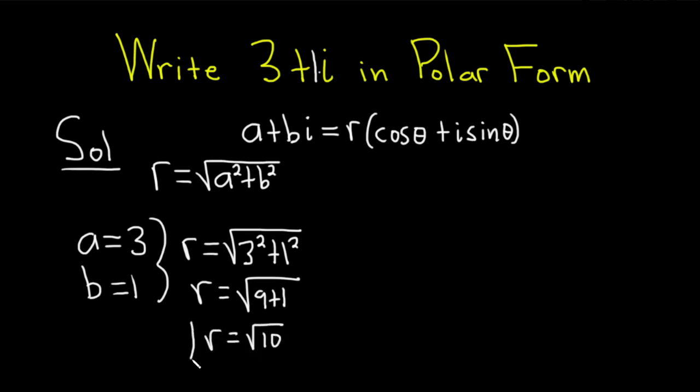This is actually the distance between the complex number and the origin in the complex plane. So the distance of square root of 10 from the origin of the complex plane. That's how far 3 plus i is from the origin. Now we have to find theta.